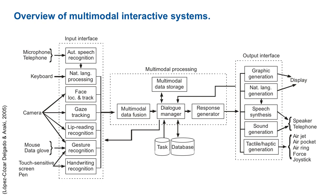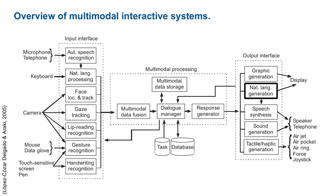The dialogue manager has to provide output information to the user, either requesting new information, generating new interaction behavior, or giving the desired response to the user. The response needs to be generated first on an abstract level, on a conceptual level, and then distributed to the different output interfaces. This process is called the fission of information — the opposite of the fusion process. The fission distributes the information to different output interfaces, which may use graphics. For example, there is a graphic generation component, or it can be natural language, which is either displayed to the user or transformed into an acoustic signal with the help of speech synthesis.